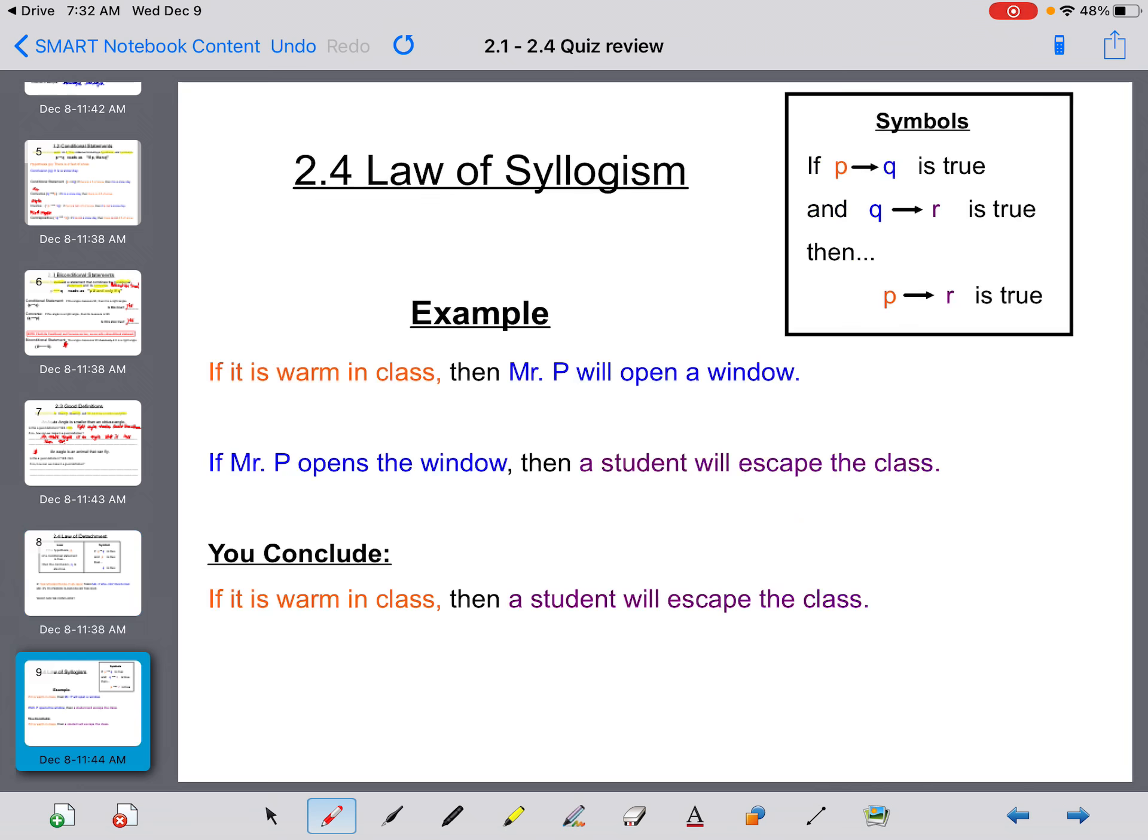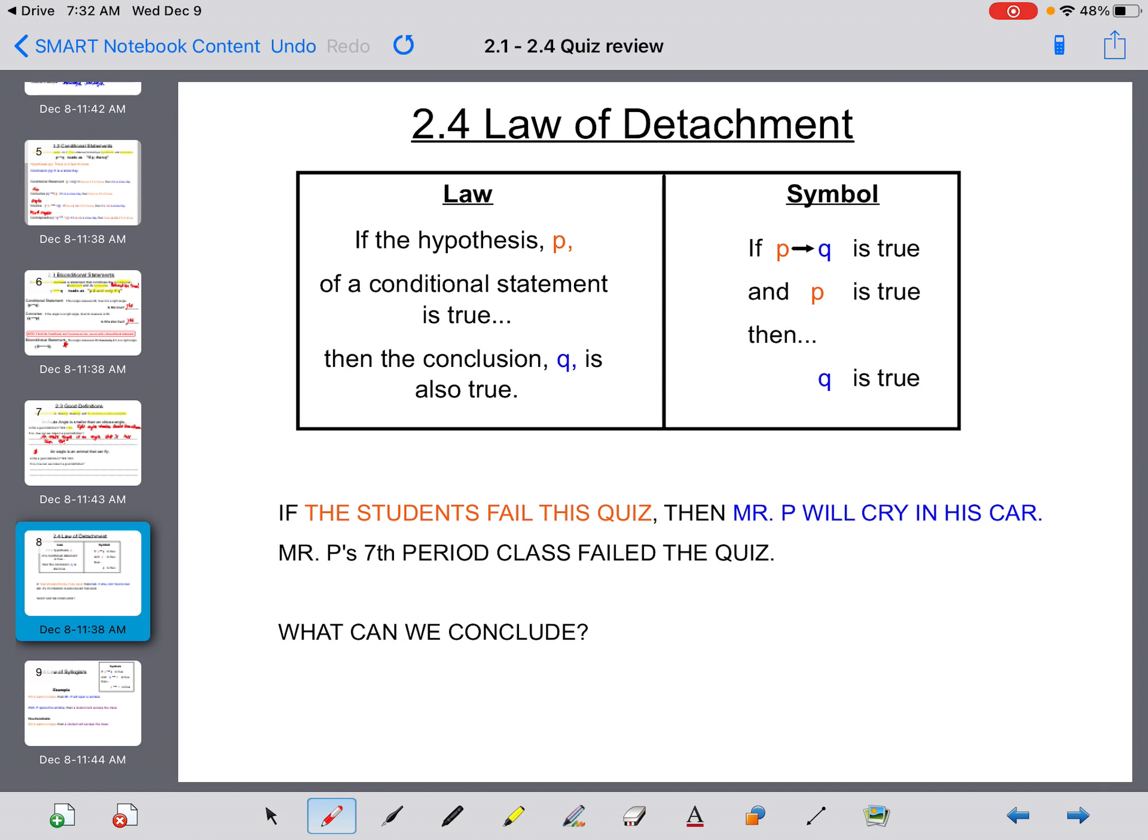The law of detachment and the law of syllogism. These are what we practiced yesterday. So if P then Q is true, and P is true, then Q must be true. If the hypothesis of a conditional is true, then the conclusion is also true. If the students fail this quiz, then Mr. P will cry in his car. Mr. P's 7th period class failed the quiz, so we can conclude that Mr. P will cry in his car.